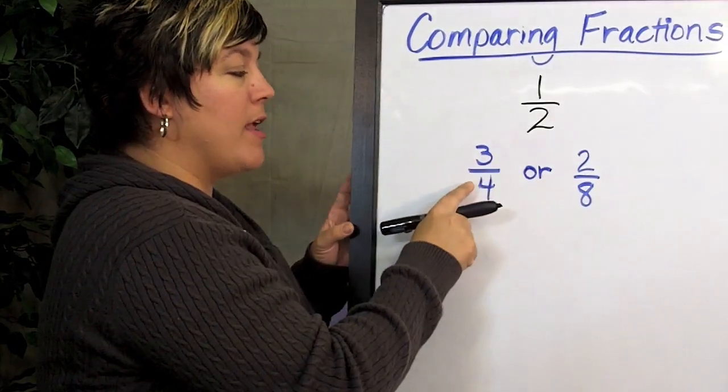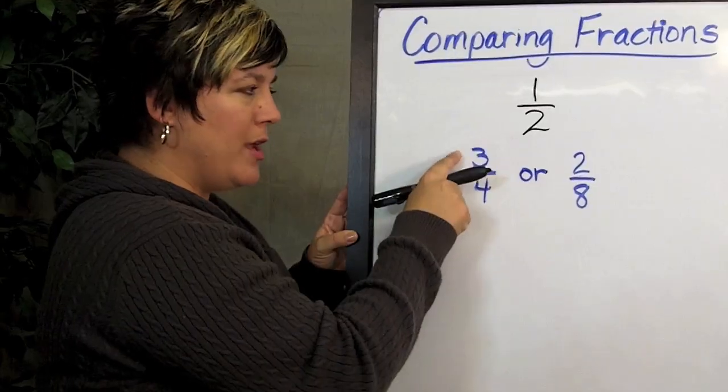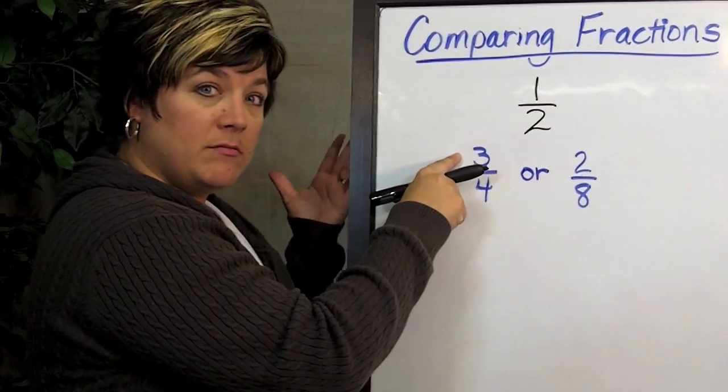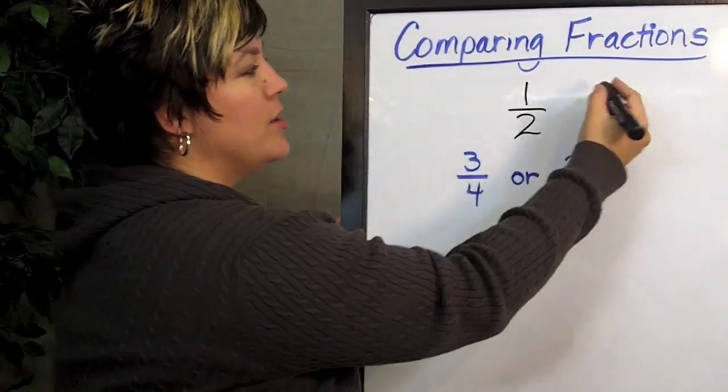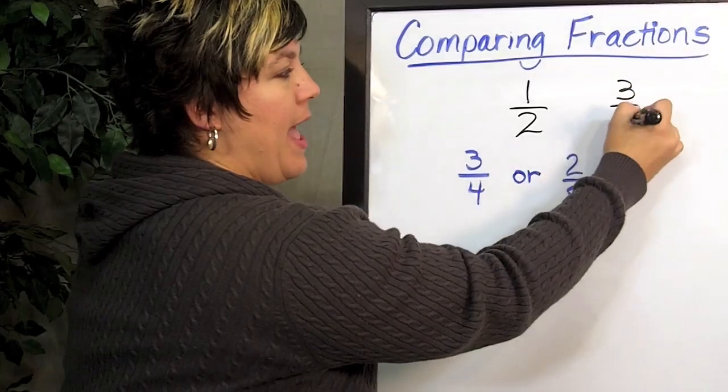And then you look at your numerator and you say, alright, half of 4 is 2. Is 3 greater or less than 2? Well, it's greater than, so it's going to be greater than half.